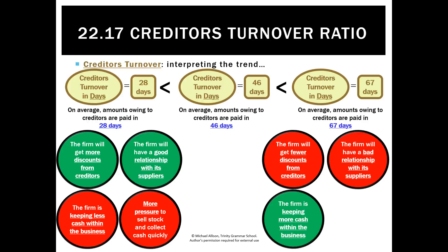On the other hand, we're going to keep more cash in the business, which is good because we can make sure we can pay our other items. If loans are really overdue, we can use the money for an extra 21 days to pay back some loans. There's also now less pressure to sell the stock and collect cash quickly — we can have a cash cycle of up to 67 days before we're paying back our creditors.